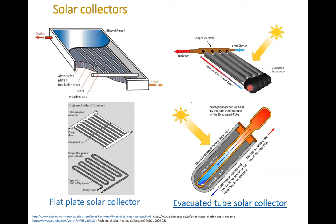If you look at the heat gradient over the heat pipe, you can see the hot end and the cold end at the end of the evacuated tube. You can have as many evacuated tubes as needed. Based on the solar intensity, you can calculate how many evacuated tubes you need for your application. Of course, these systems are more efficient compared to the flat plate solar collector, and they are also more expensive than the flat plate. In fact, you can construct a flat plate yourself, but the evacuated tubes may need professional companies to fabricate and install them.